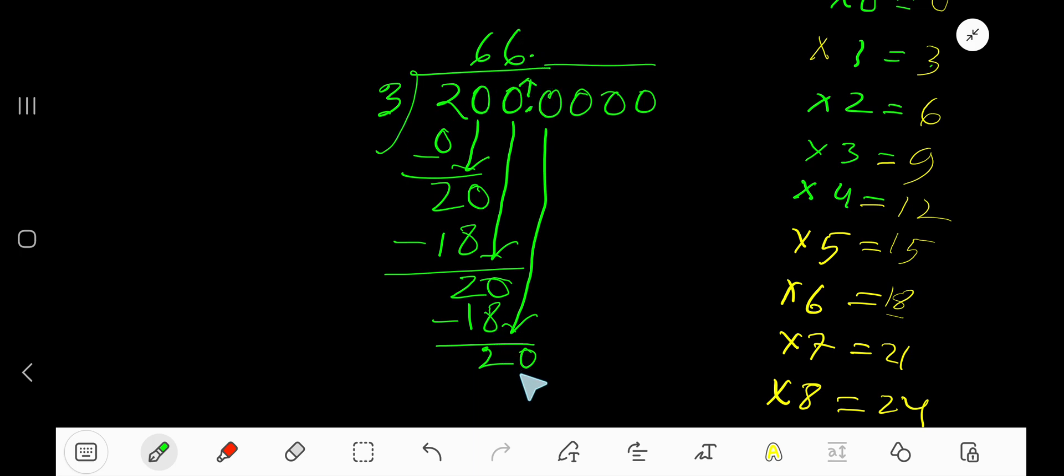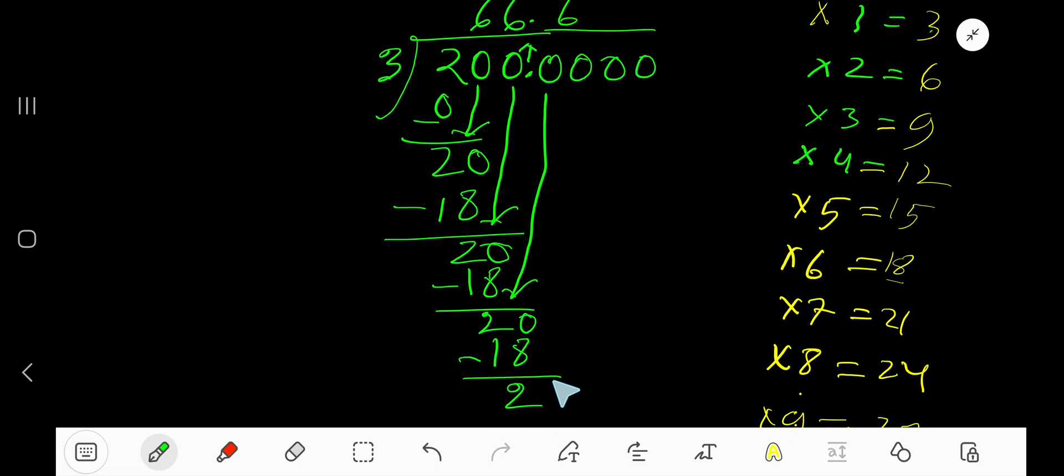3 goes into 20 how many times? 6 times. 6 times 3 is 18. Subtract. You can bring down this 0.